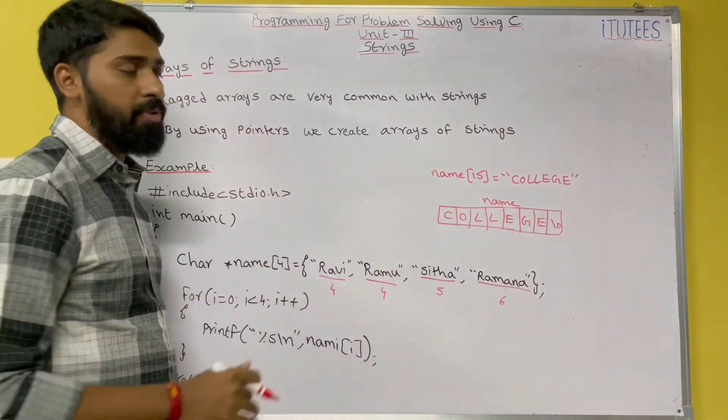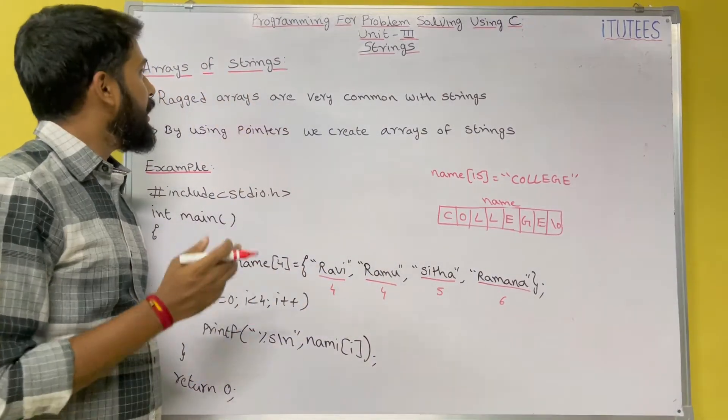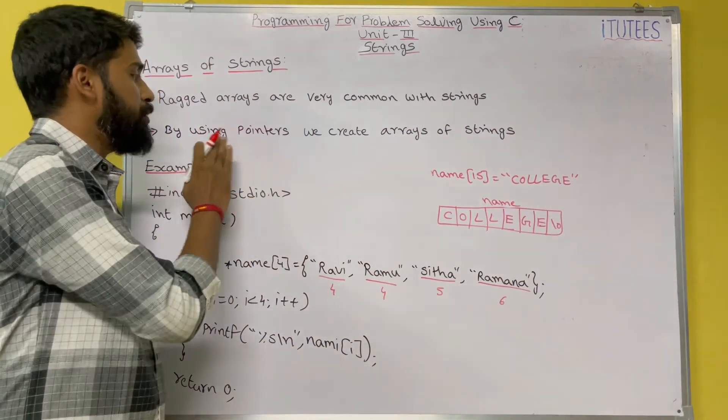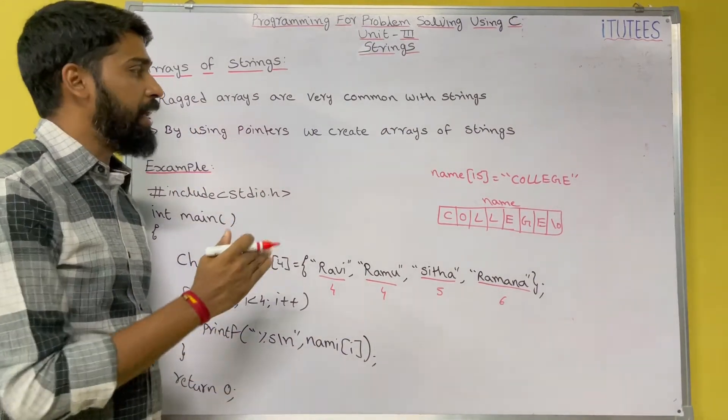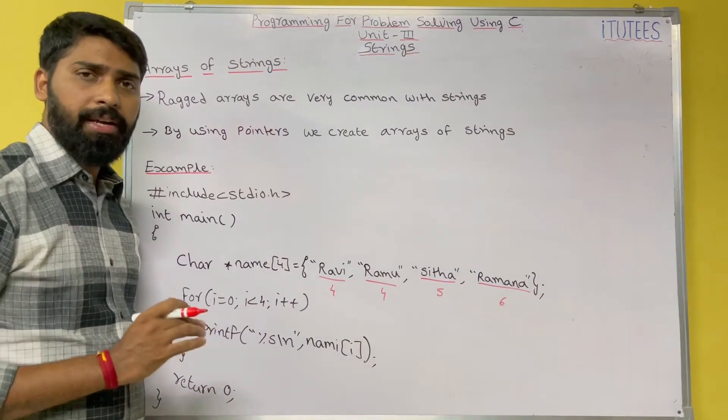That we call array of strings. How we can create array of strings? By using pointers, we create array of strings. Now we see the example.